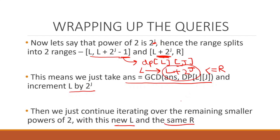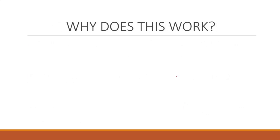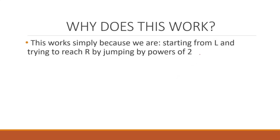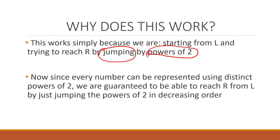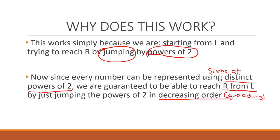This is where the initial principle of sparse table comes into picture. We are starting from l and reaching r by jumping powers of 2. Since every number can be expressed as a sum of distinct powers of 2, we are guaranteed to represent the range length as a sum of distinct powers of 2. That's why we can always reach r from l by jumping powers of 2 in decreasing order greedily — this is the essence of sparse table.